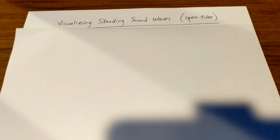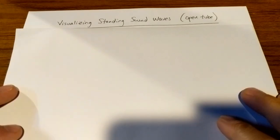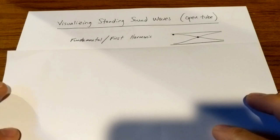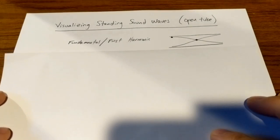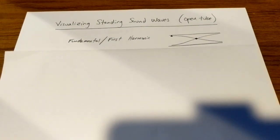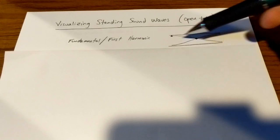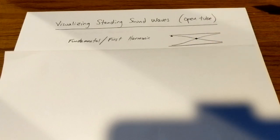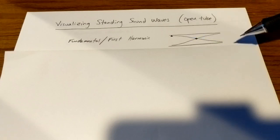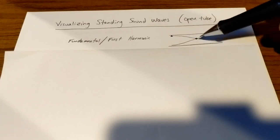Before we create any standing sound waves, we're going to try to imagine what goes on when we produce standing sound waves in an open tube. First off, the fundamental, which is also called the first harmonic, is produced in this open tube. We'd say it's open because both ends are open. The boundary conditions are symmetric because both ends are open, meaning free to oscillate. And in the center, there's a node.